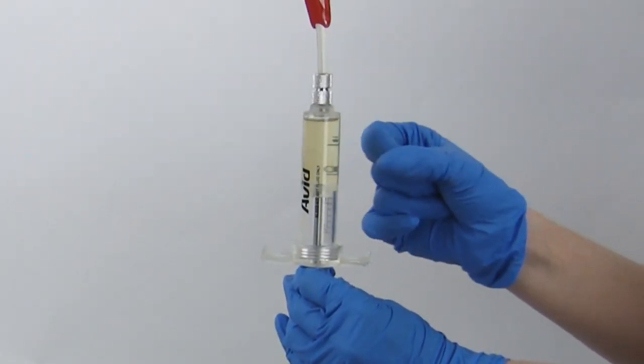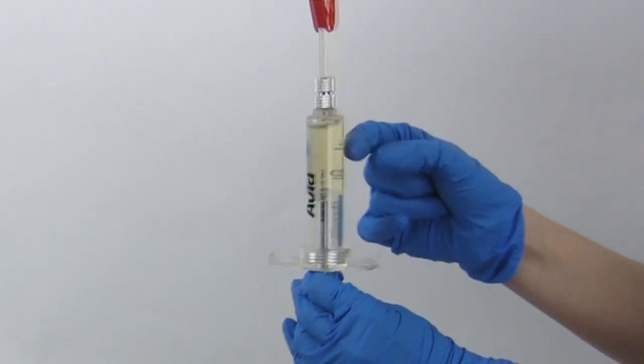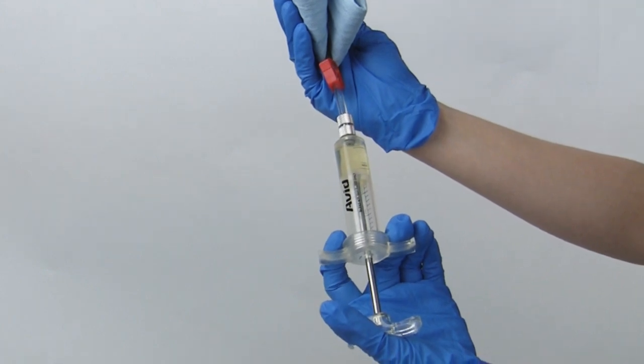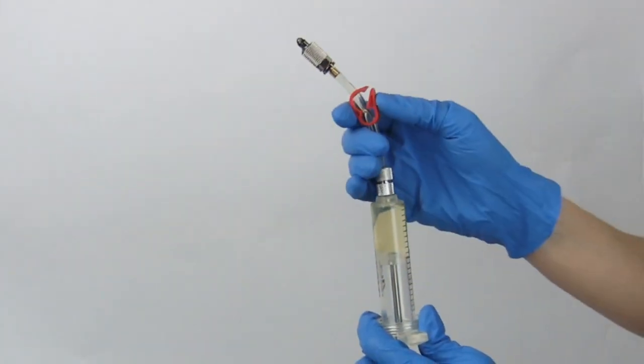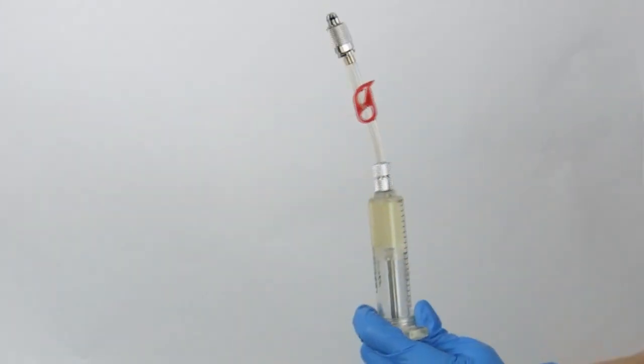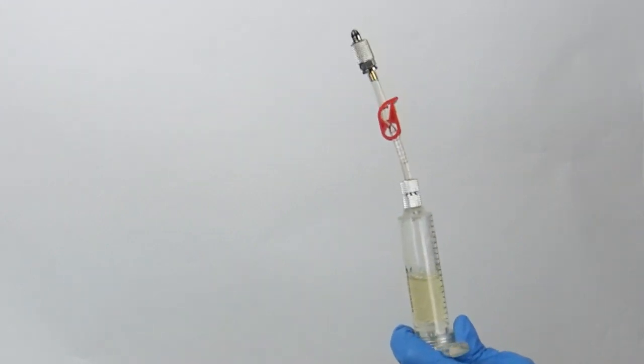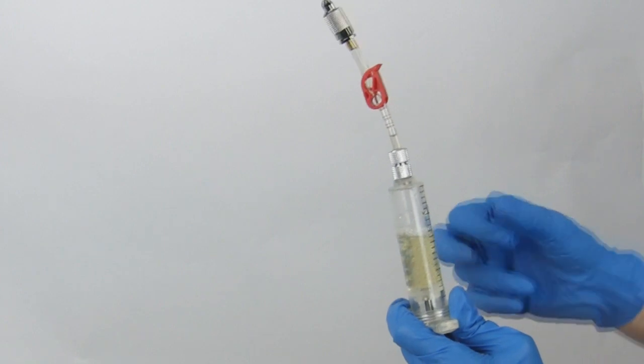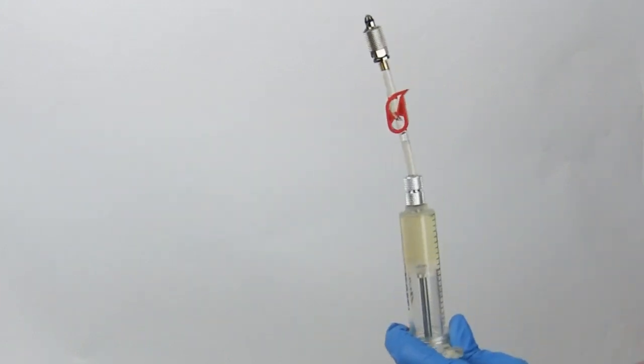Tap the side of the syringe to bring any air bubbles to the top. Place a towel around the tip and slowly push the air bubbles out. Close the hose clamp and pull on the plunger. Bubbles will appear to form and enlarge. Continue to pull on the plunger and tap the syringe to release the bubbles from the sides and the bottom.